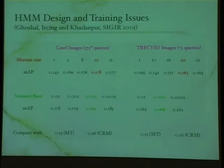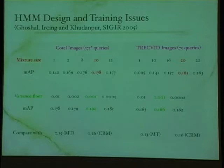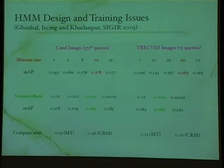On the TREC data, our average precision of 20% compares well to the state of the art. On the held-out NIST test collection of 32,000 images, we ran queries for 11 of the 17 concepts that were in our HMM state space — we couldn't do the others, like 'Madeleine Albright' or 'Samuel L. Jackson,' for which we had no labeled training images. Our mean average precision on those 11 was 20%.